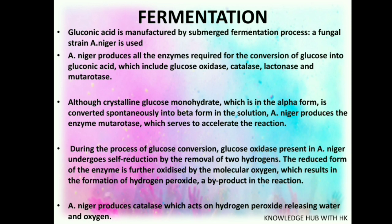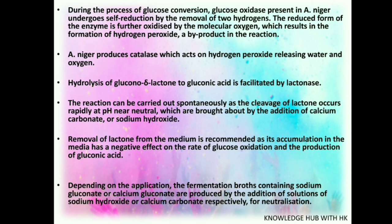This reaction is performed by the enzyme mutarotase produced by Aspergillus niger. During the process of glucose conversion, glucose oxidase enzyme present in A. niger undergoes self-reduction by the removal of 2 hydrogen. This reduced form of enzyme is further oxidized by molecular oxygen, resulting in the formation of hydrogen peroxide, a by-product in the reaction. A. niger also produces catalase which acts on hydrogen peroxide releasing water and oxygen. Hydrolysis of glucono-delta-lactone to gluconic acid is facilitated by lactonase. The reaction is carried out as the cleavage of lactone occurs rapidly at a pH near neutral. Hence, removal of lactone from the medium is recommended, as its accumulation in the media has a negative effect on the rate of glucose oxidation and the production of gluconic acid.